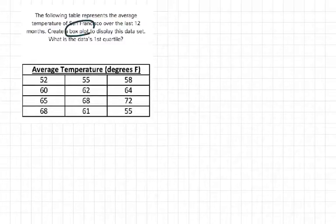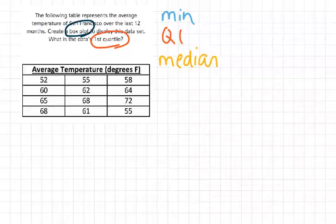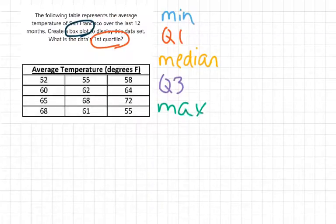If we're going to create a box plot, then I know we need five values. We need the minimum, we need the first quartile, which is actually what this question is asking us for. We need the median, we need the third quartile, and then finally we need the maximum value. These are the five values that I need to create a box plot.